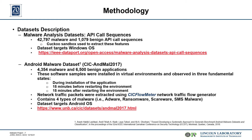The Android Malware Dataset second model 2017 was obtained from researchers at the University of New Brunswick who were developing benchmarks for the generation of malware datasets. They stored around 10,854 samples, of which 6,500 were benign — harmless to the end user and the environment — and the remaining 4,354 samples were malware-infested. Characteristics of each sample were recovered using a custom network traffic flow generator analyzer called CICFlowMeter, which was used to obtain PCAP files or packets. This dataset was observed during three fundamental states: during installation of the application, 15 minutes before restarting the environment, and 15 minutes after restarting the environment. It contains 4 types of malware: adware, ransomware, malware, and SMS malware. This dataset targets Android OS.